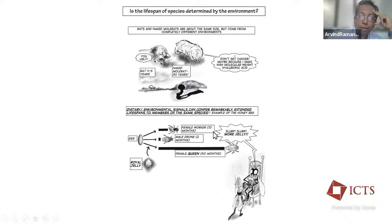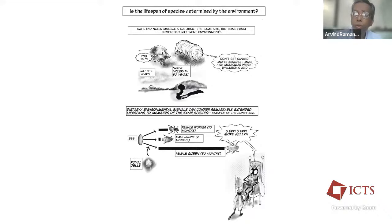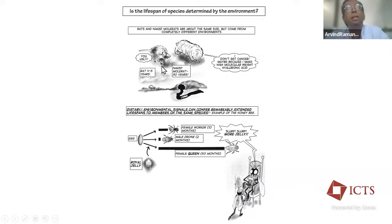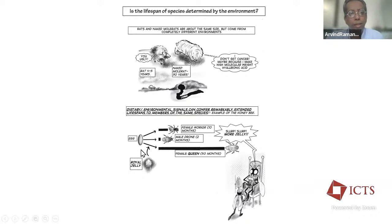Aging biologists love studying the naked mole rat, which can live about 40 years, whereas regular rats live only a few years — a remarkable increase in lifespan within essentially the same species. There's huge excitement around what makes naked mole rats so resilient, including a compound called hyaluronic acid they secrete in large amounts, which has anti-cancer effects. This is a field unto itself.